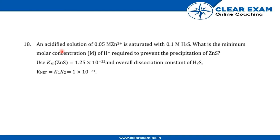Welcome back. The question is: an acidified solution of 0.05 M Zn²⁺ is saturated with 0.1 M H₂S. What is the minimum molar concentration of H⁺ required to prevent the precipitation of zinc sulfide? Use Ksp(ZnS) = 1.25 × 10⁻²² and overall